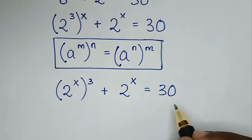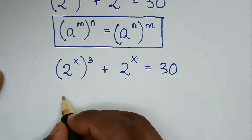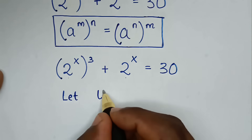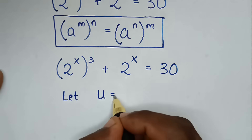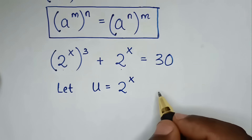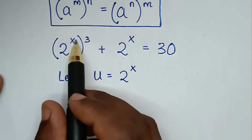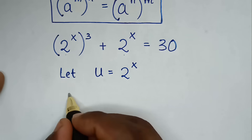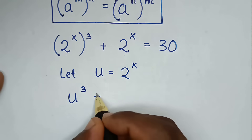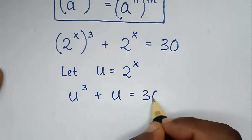From here, 2^x is common. So we let u = 2^x. Then we substitute u, so it becomes u³ + u = 30.